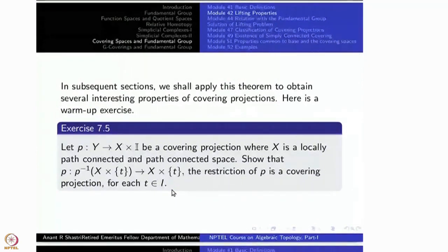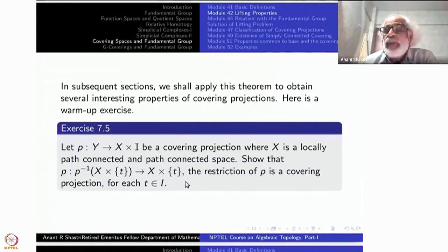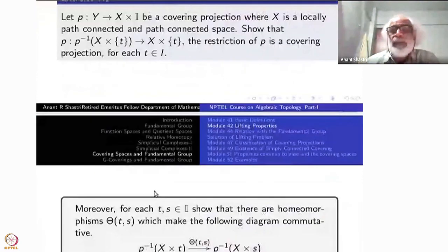The point of this one is all these covering projections will be in some sense later on will be same because X cross t is the same. Now X cross t or X cross s they are homeomorphic to each other. They are copies of X. The above spaces will be also homeomorphic to each other in such a way that the projection map commutes with that homeomorphism. So that will come later. Right now you have to just say this much. This is the second part.